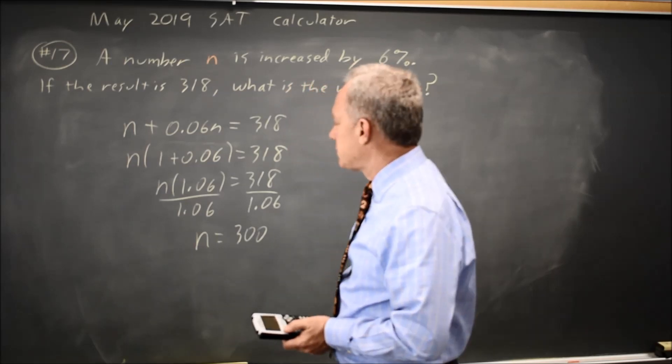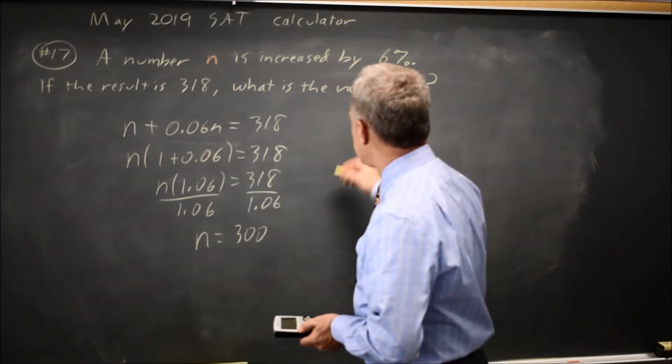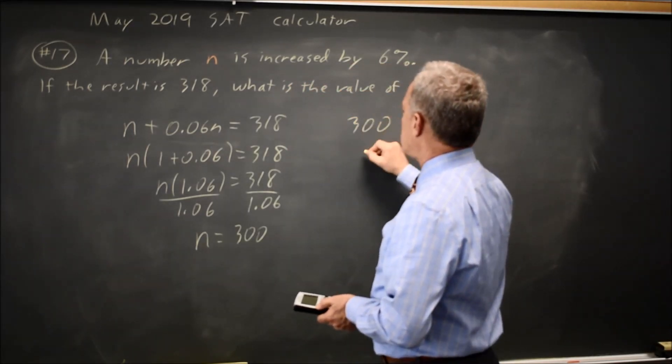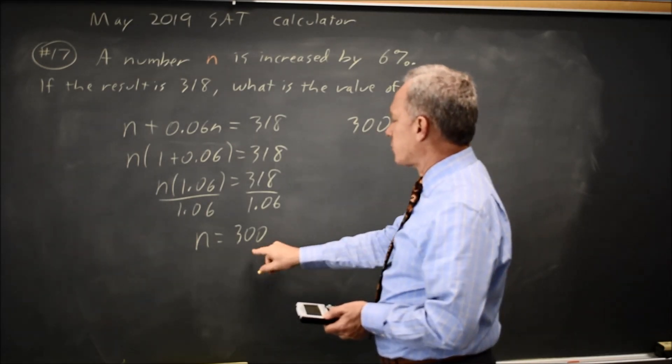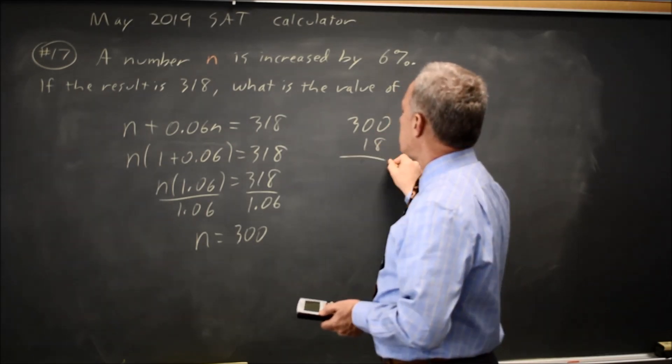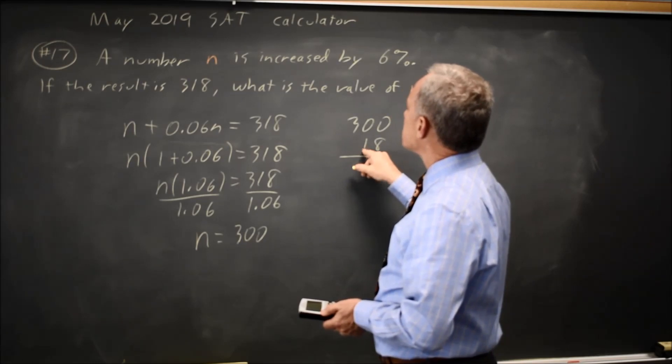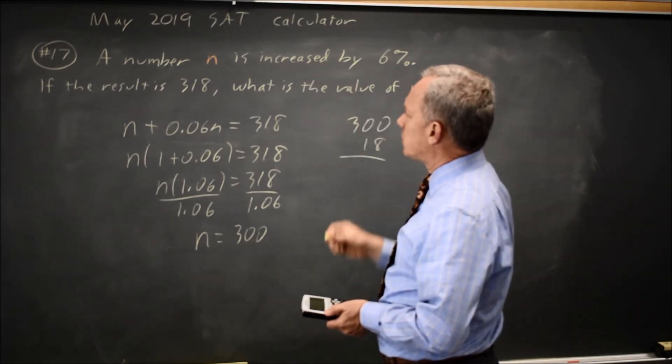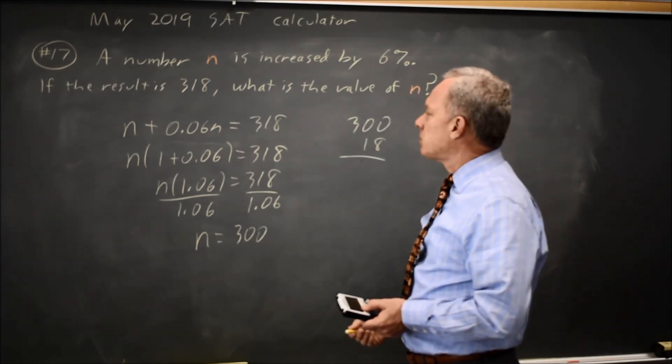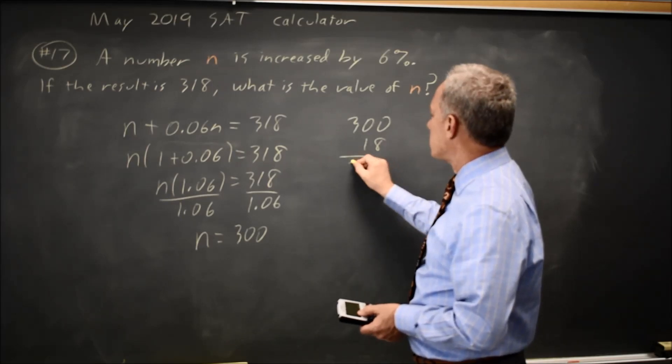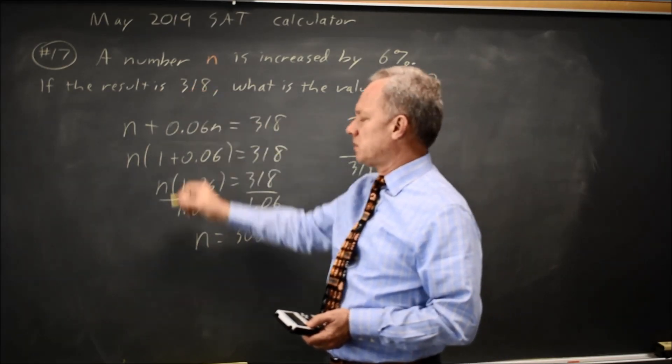You can check that because 6% of 318 is, I'm sorry, 6% of 300 is 18. And if you add that 6% to the 300 to increase n by 6% of n, you get 318, which is the number they said was our result.